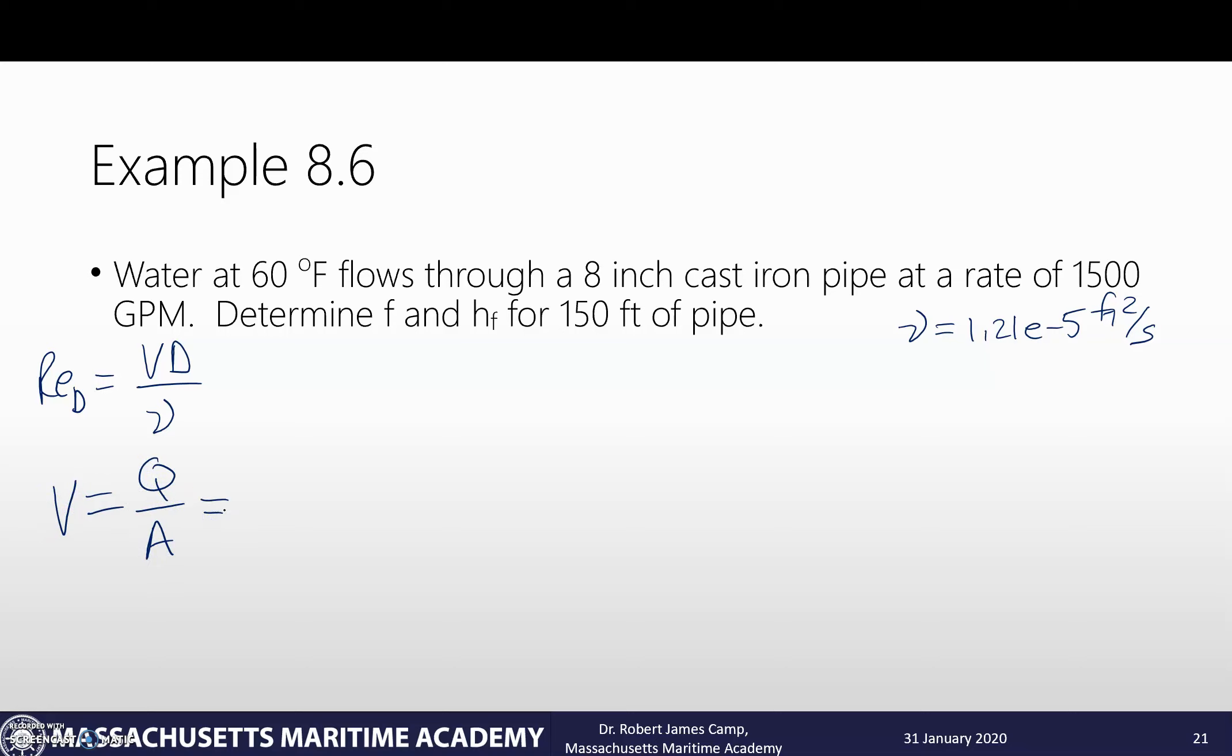Velocity is Q over A. It's very important to remember, volumetric flow rate is not velocity. If you plug this into the Reynolds number equation, you should notice the units don't work, but also it will give you the wrong answer. It's a very common problem that we have in fluids. So we've got 1,500 gallons per minute. We want to convert that to feet per second. So that's one minute, 60 seconds, and then 0.1337 cubic feet is one gallon. So that gets us cubic feet per second on the top, divided by the area.